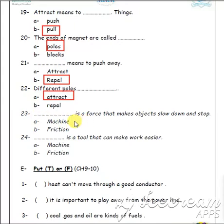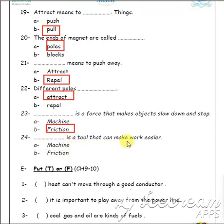Number 23: what is a force that makes an object slow down and stop, and may give off heat — machine or friction? Good job! Number 24, the last one: what is a tool that can make work easier — machine or friction?